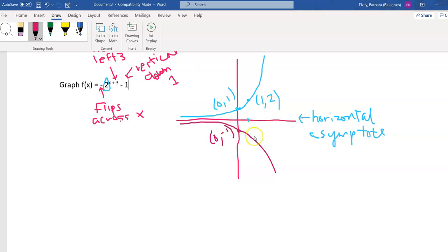And then this point right here will actually end up being 1, negative 2 when it flips over. So our points have moved. This maroon graph is now our graph.